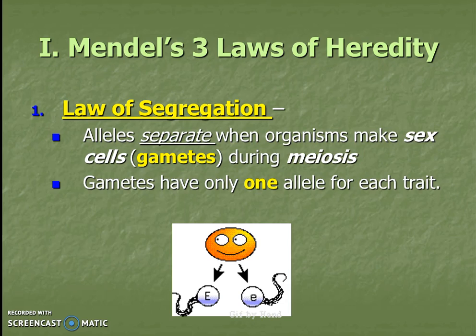We as a full organism have two copies — one from mom and one from dad — but a gamete only has one allele for each trait.